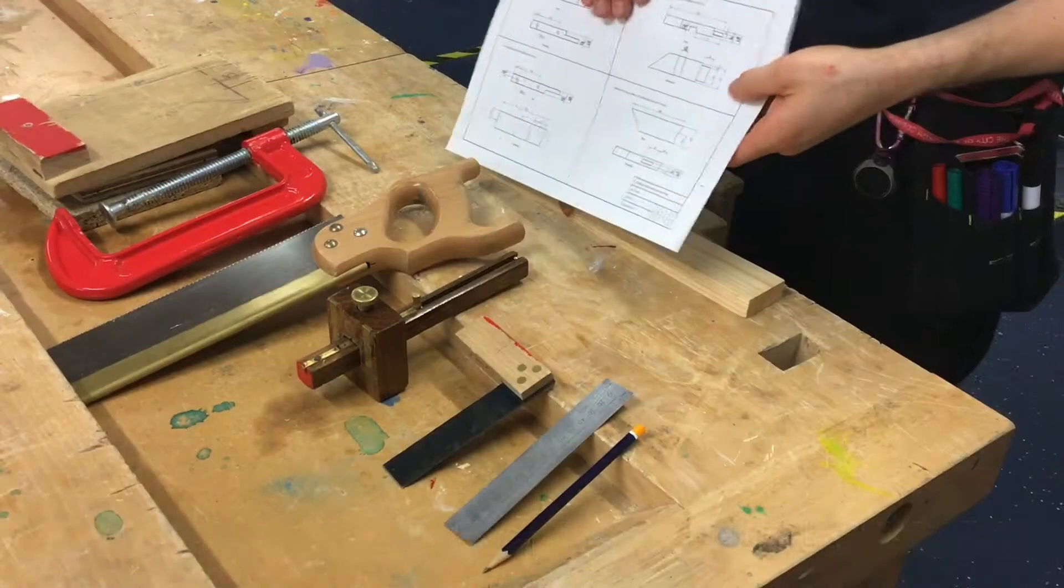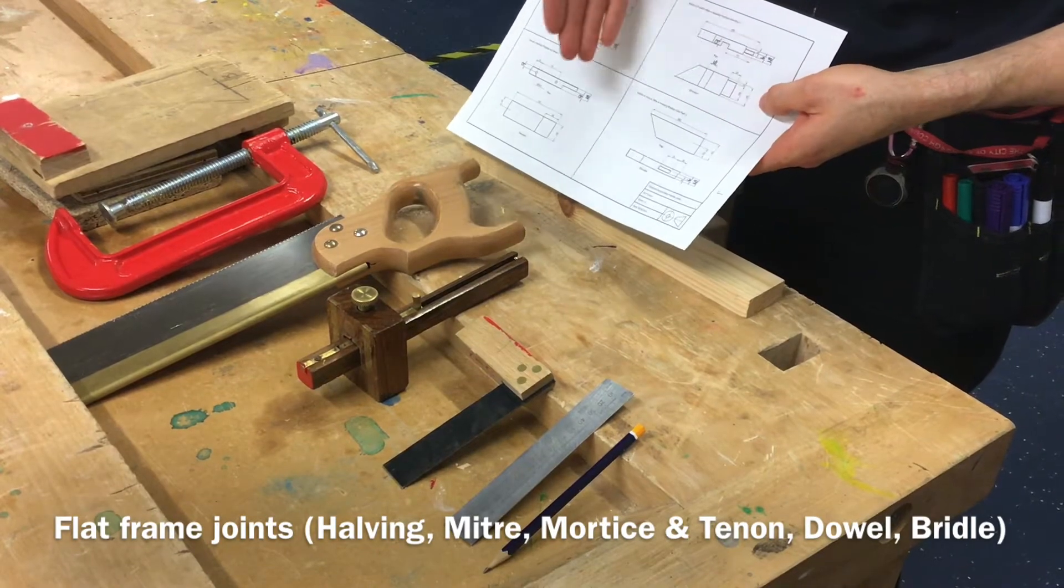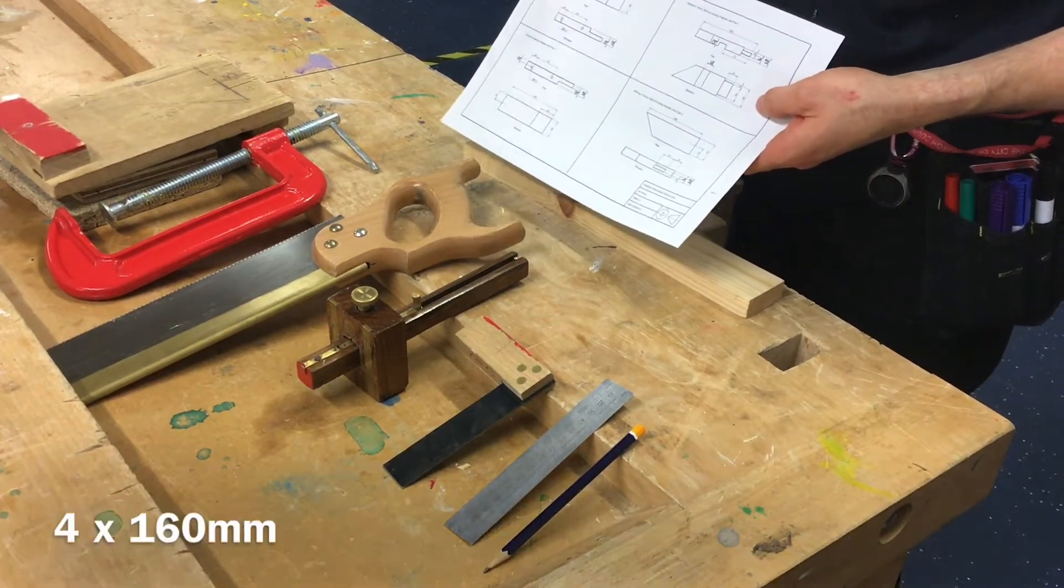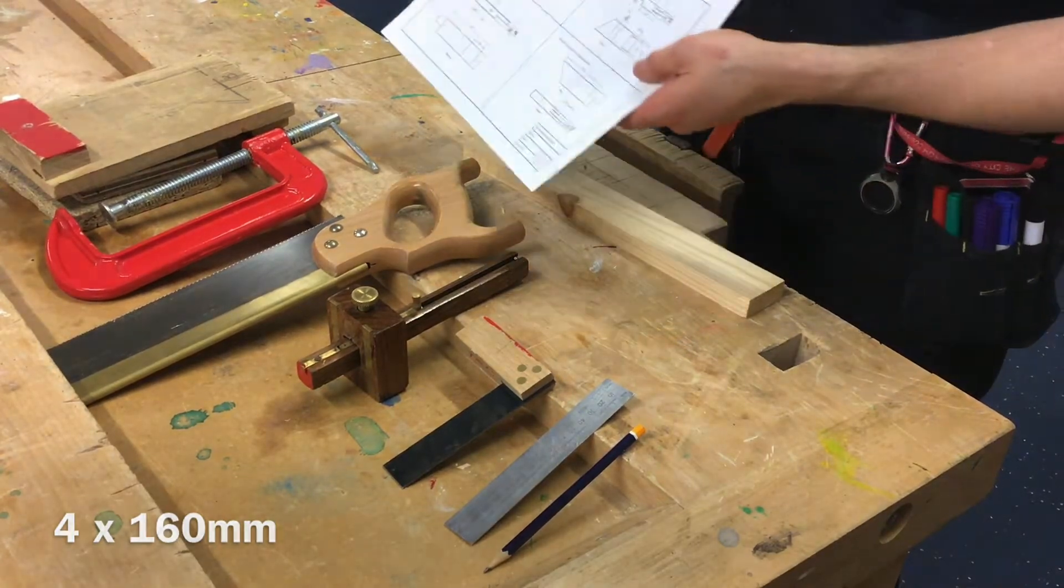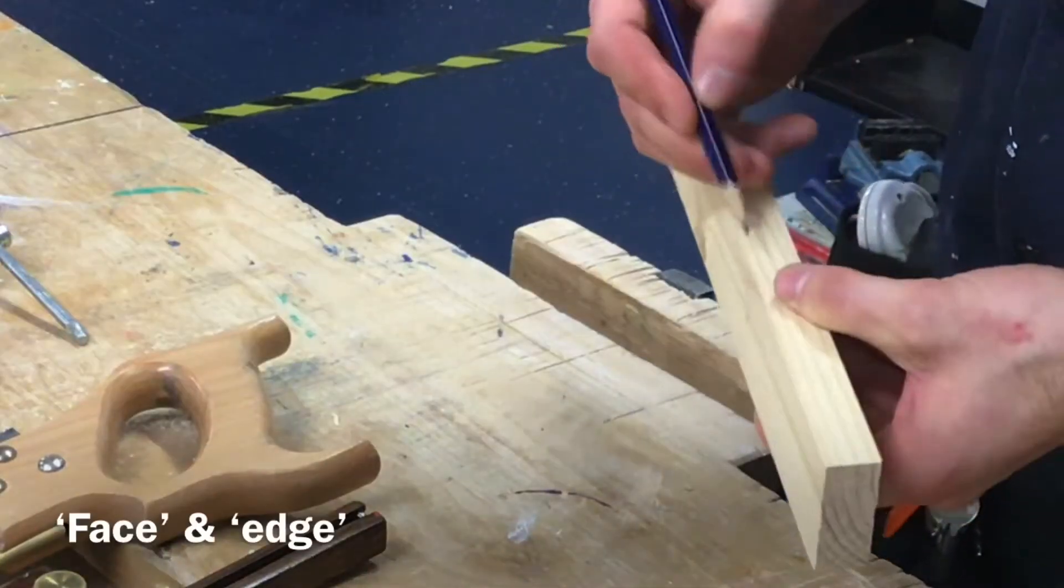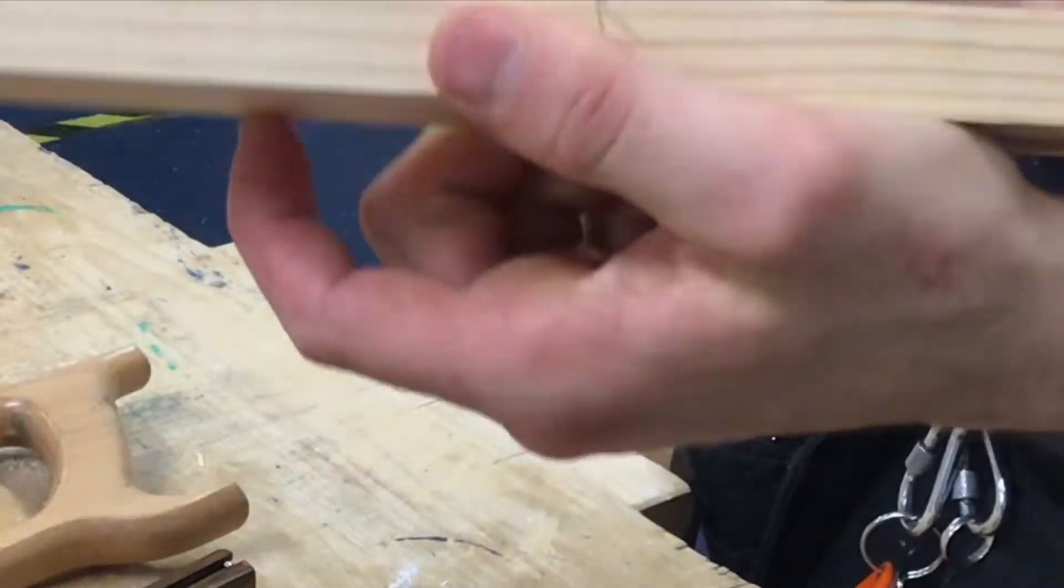We're going to start practicing all of the flat frame joining methods. The first thing we're required to do is cut four lengths of material to 160mm, which is to mark on face and edge onto your material.